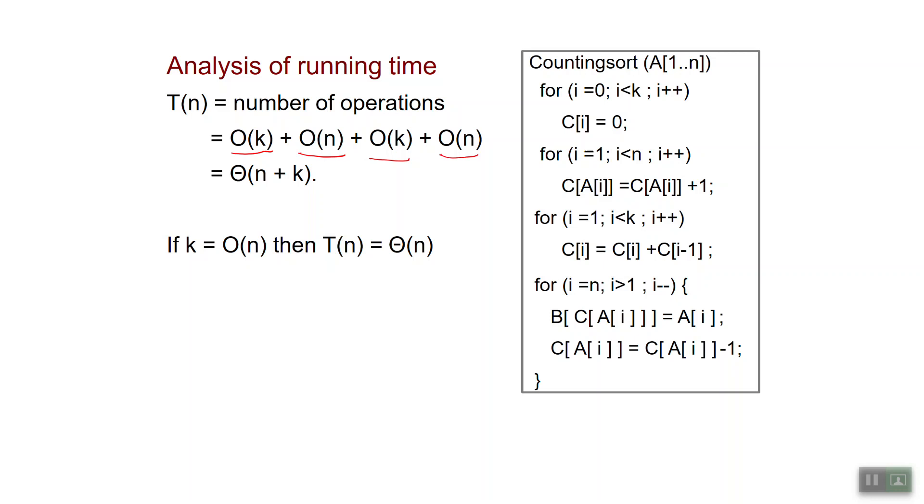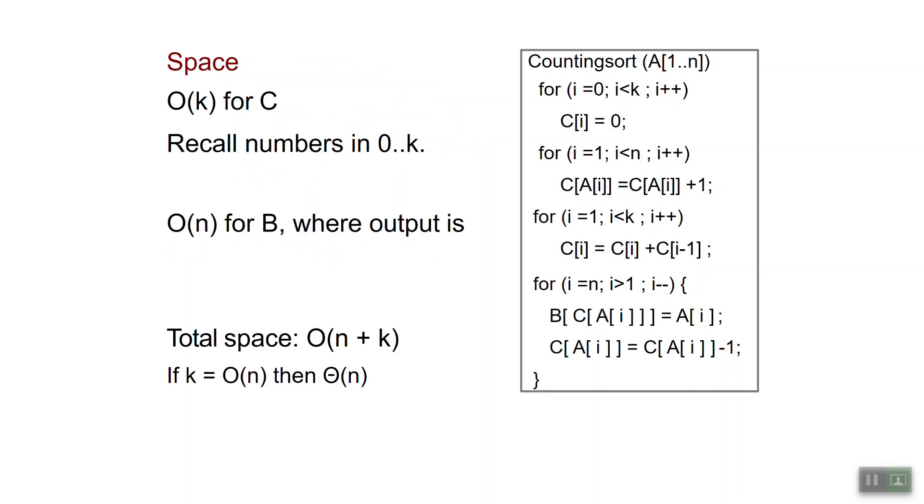Let's first however turn to analyzing the space. The space also is easy to analyze for counting sort. You need order of k for the auxiliary array C because recall that the numbers are assumed to be in 0 to k. And then you also need n additional entries for the output array B. So the total space is order of n plus k, which again if k is order of n is theta of n. And note how this is worse space than for example bubble sort which only took constant space.